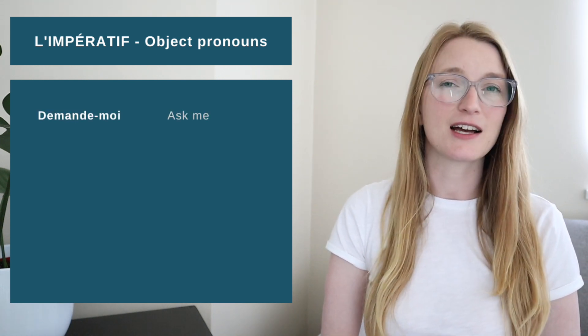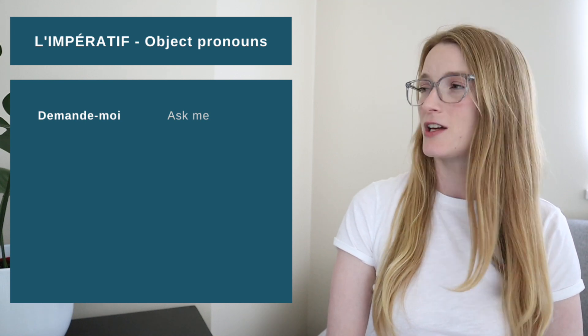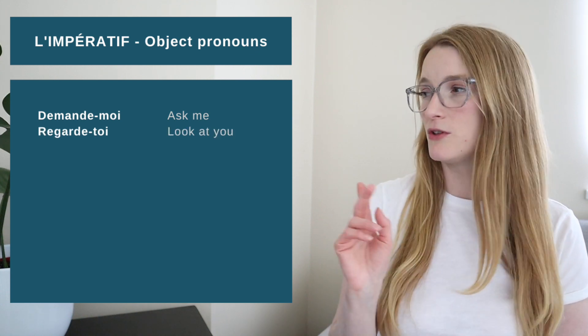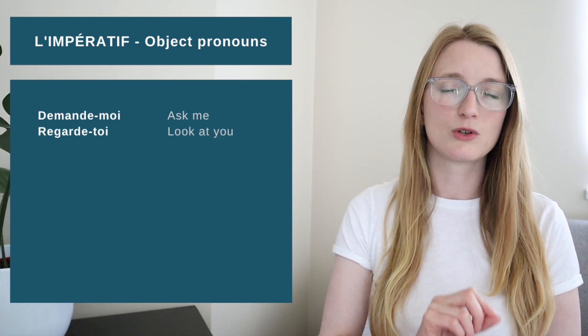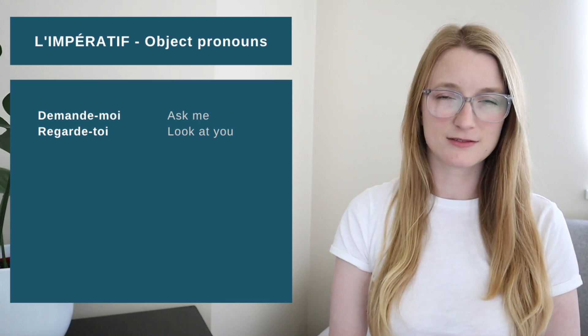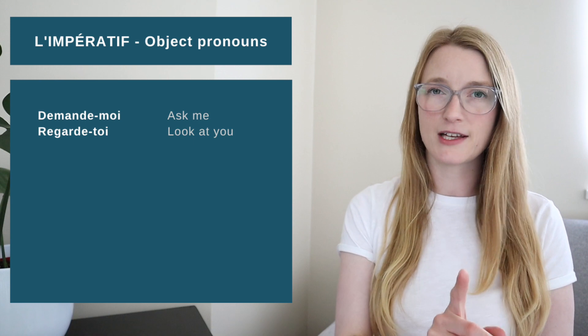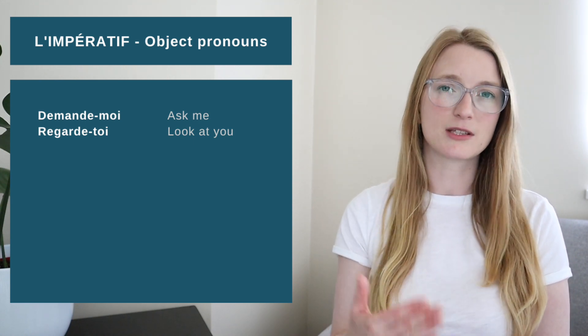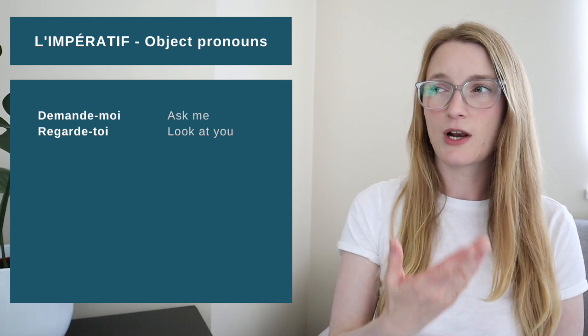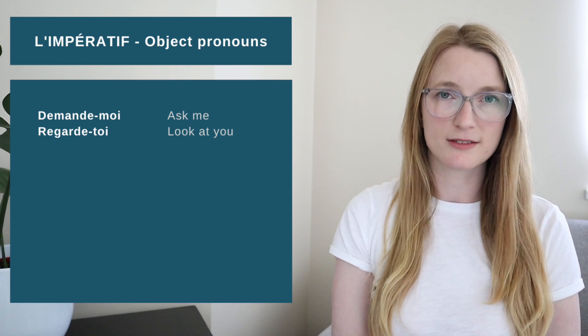What if we say Ask me with Tu conjugated with Tu, we are going to have Demande-moi. Or if we say Look at you, we have Regarde-toi. So both of them don't take an S because it's an ER verb. So we only keep the E. We saw that yesterday or in the lesson before if you catch up later. But so like I said, Me and Te are going to become Moi and Toi.